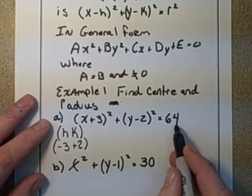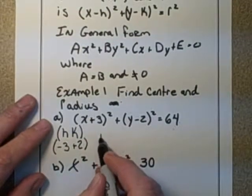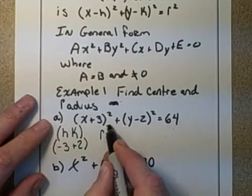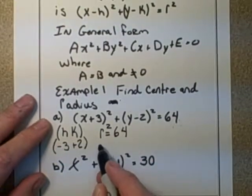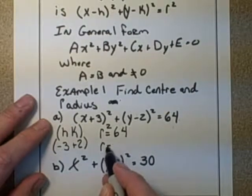And then to get the radius, you just have to remember that this is r², so r² = 64. Solved for r by rooting both sides, r is going to equal 8.